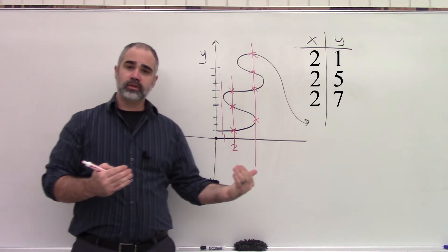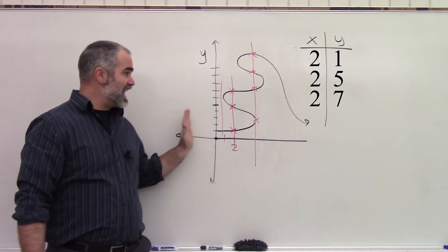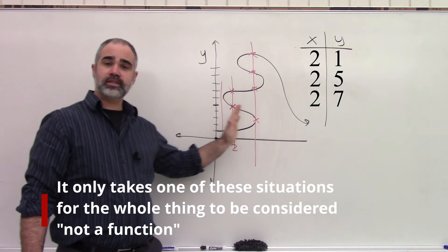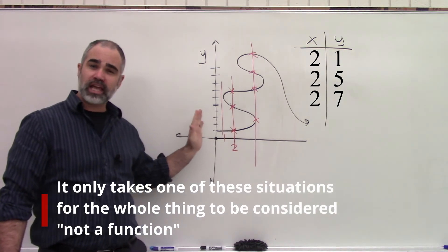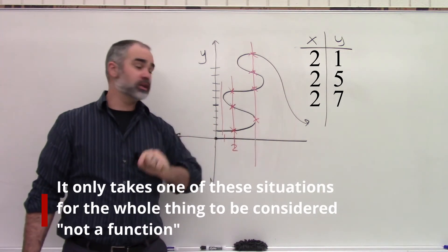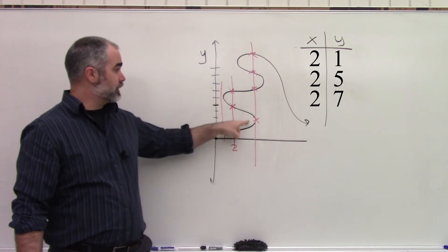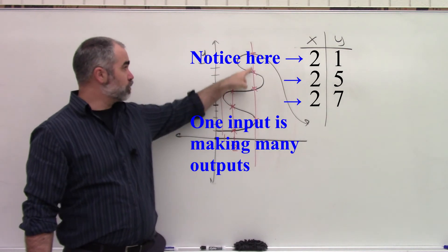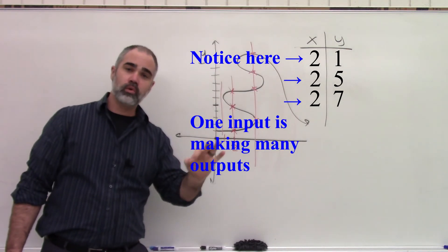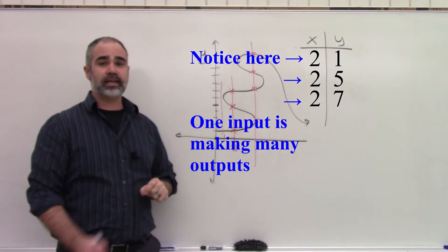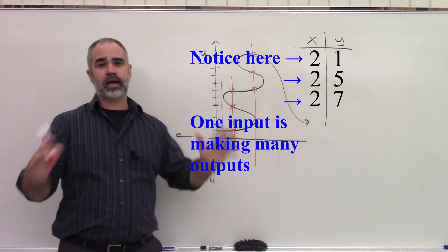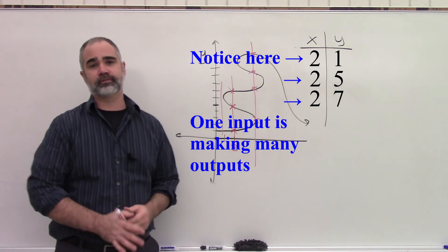The only rule is: at any point on your graph, if there's any place where one input gives you more than one output — if one X is giving you more than one Y at any place — then the entire thing is not a function.